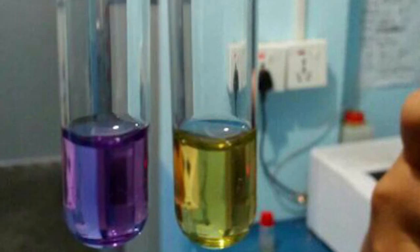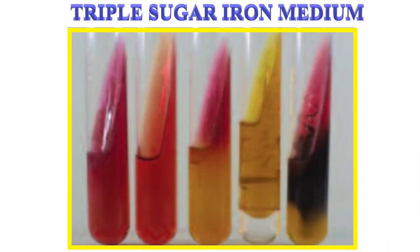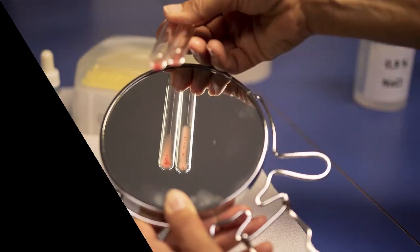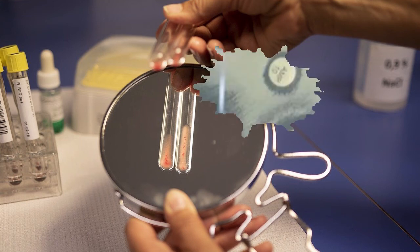Biochemical tests are used for identification of microorganisms by the presence or absence of enzymes and other biochemical characteristics specific to microorganisms. Examples include the oxidase test, catalase test, and sugar fermentation tests.